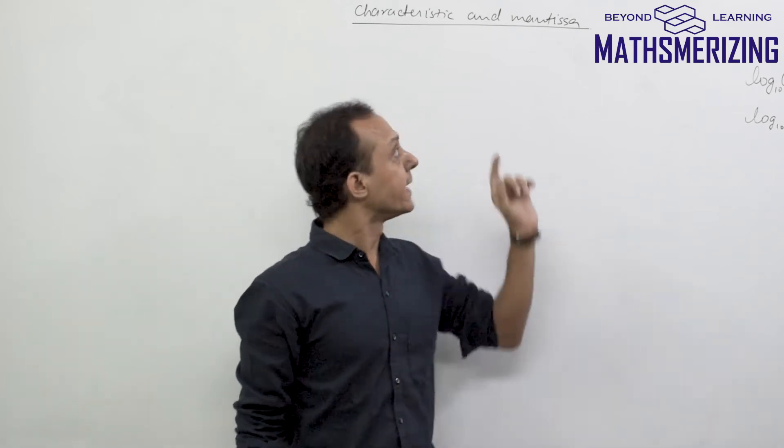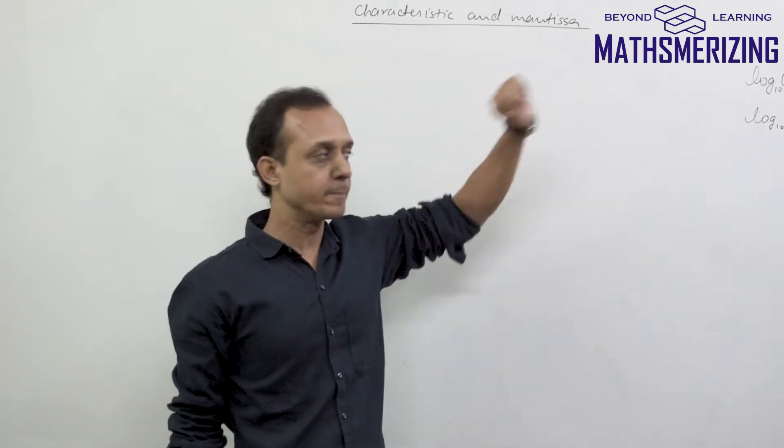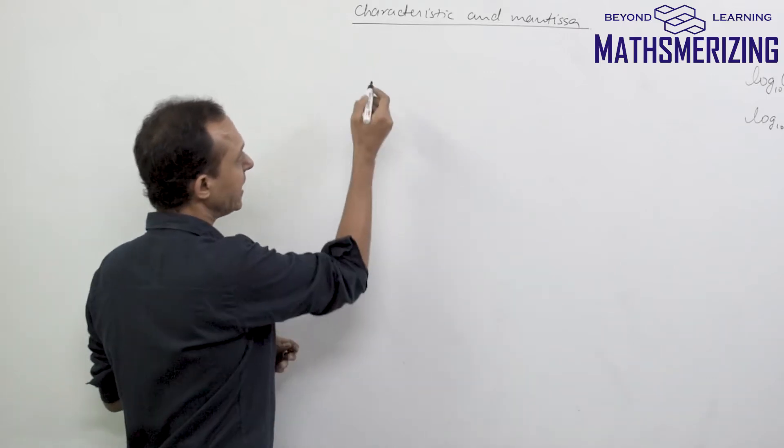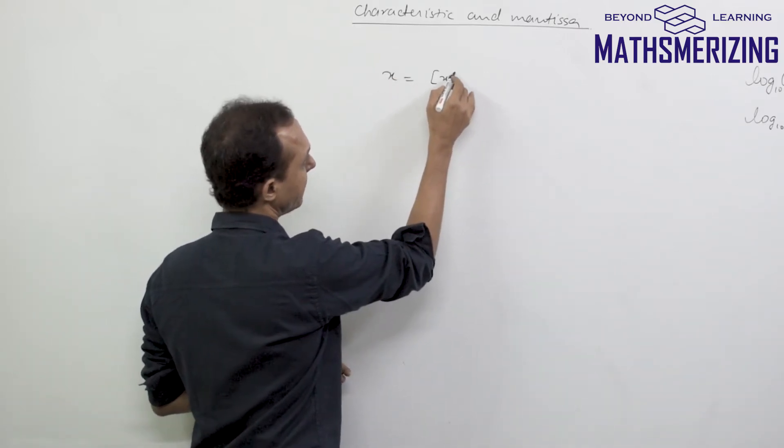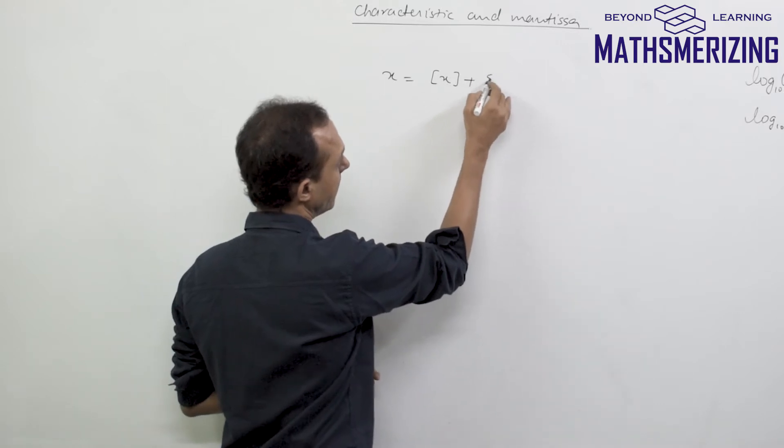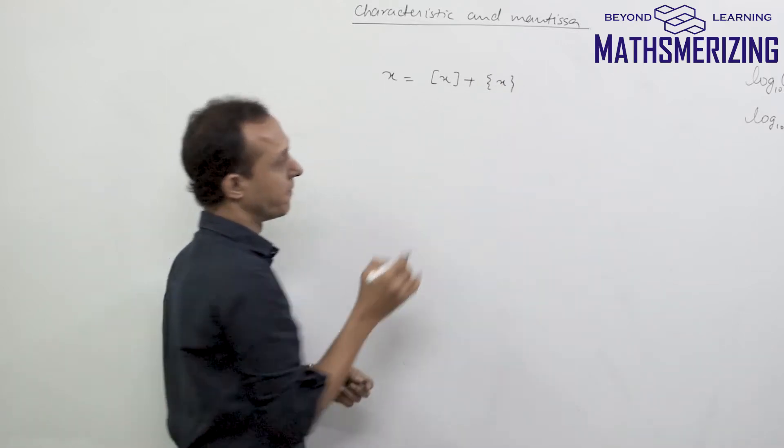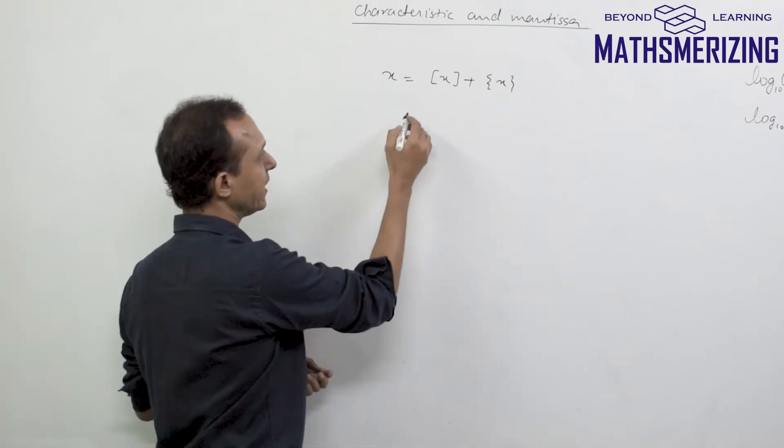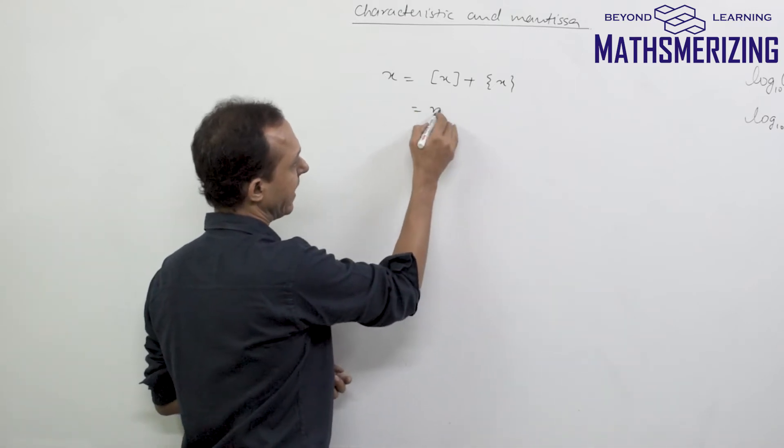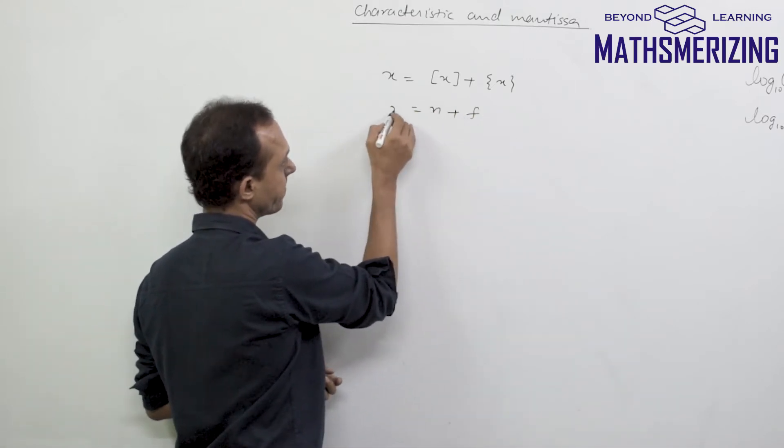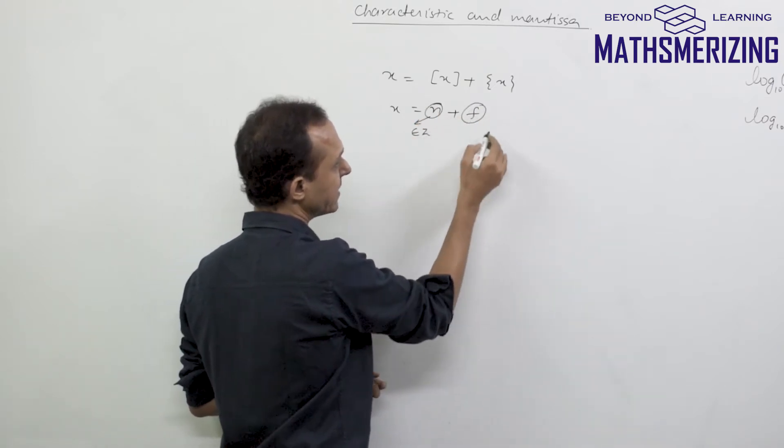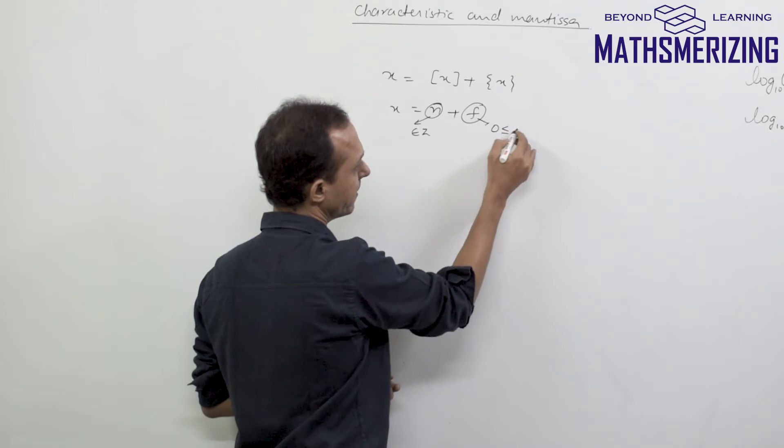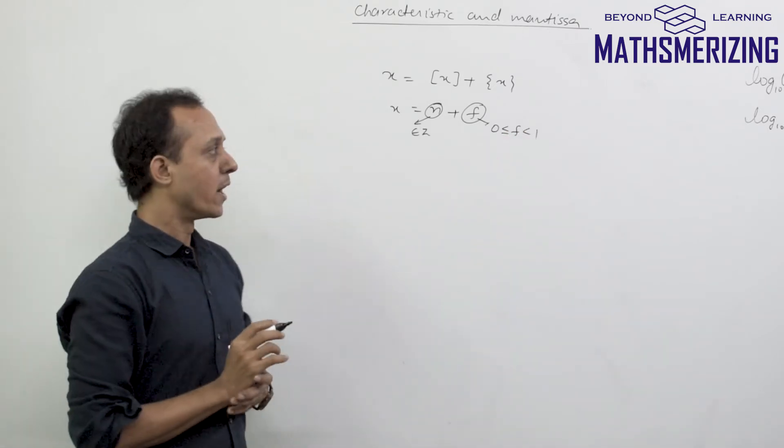Now we discuss problems based on characteristic and mantissa. Any number X can be expressed as a sum of its integral part plus its fractional part. So I can write any number X as n plus F, where n belongs to integers and F is a positive number which lies between 0 and 1.